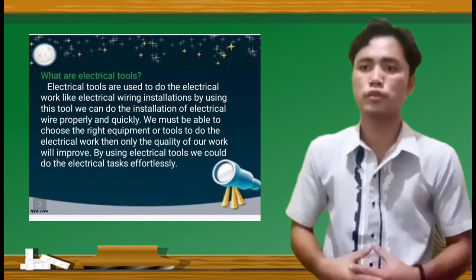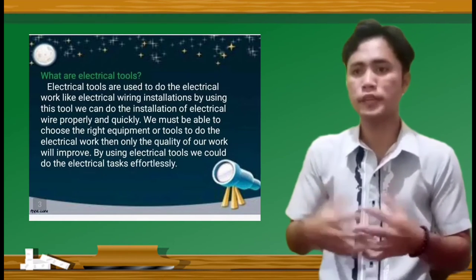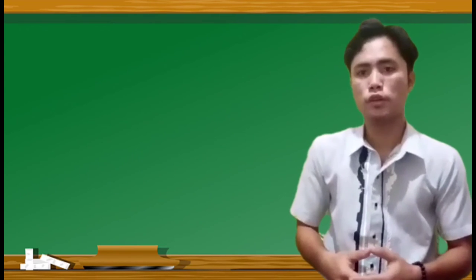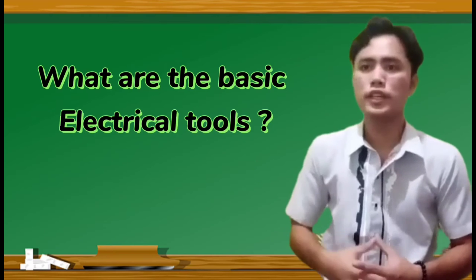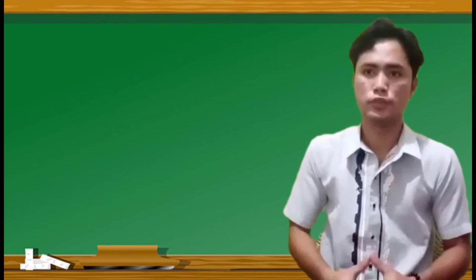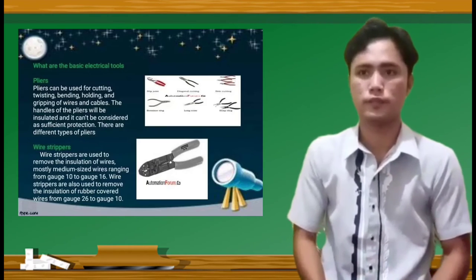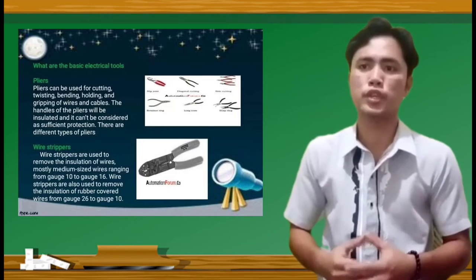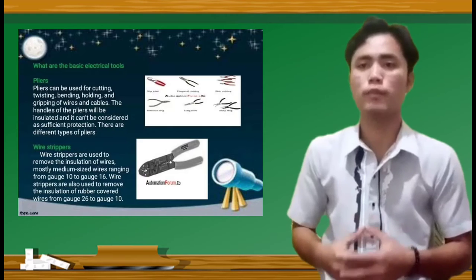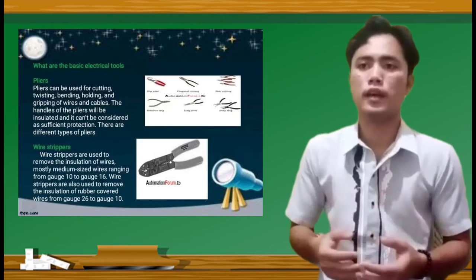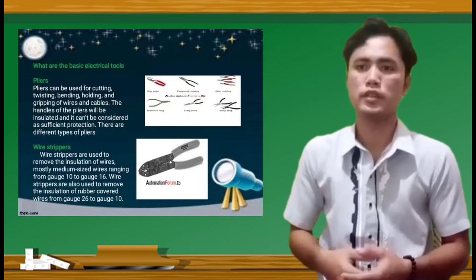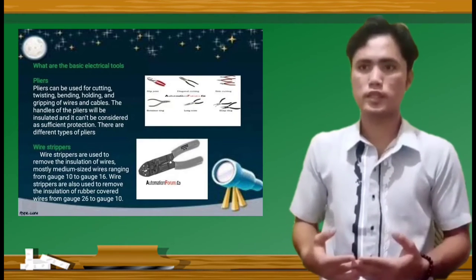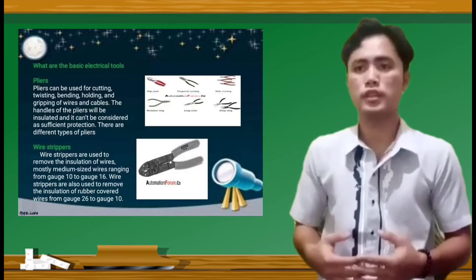So what are the basic electrical tools? Number one is pliers. Pliers can be used for cutting, twisting, bending, and gripping of wires and cables. The handles of the pliers will be insulated and it can be considered as sufficient protection. There are different types of pliers.